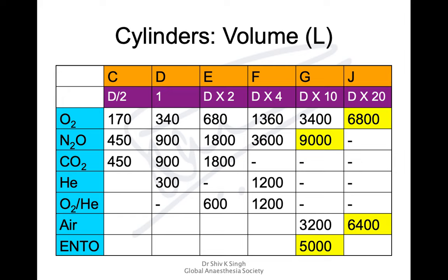For cylinder volumes, there are various sizes. Use D-type as a reference value of 1: E is twice D, F is four times D, G is ten times D, J is twenty times D, and C is half of D. For example, an oxygen D cylinder holds 340 liters: E = 680L, F = 1,360L, G = 3,400L, J = 6,800L. Nitrous oxide and Entonox are available in G type (9,000L and 5,000L respectively), and air in J type (6,400L).